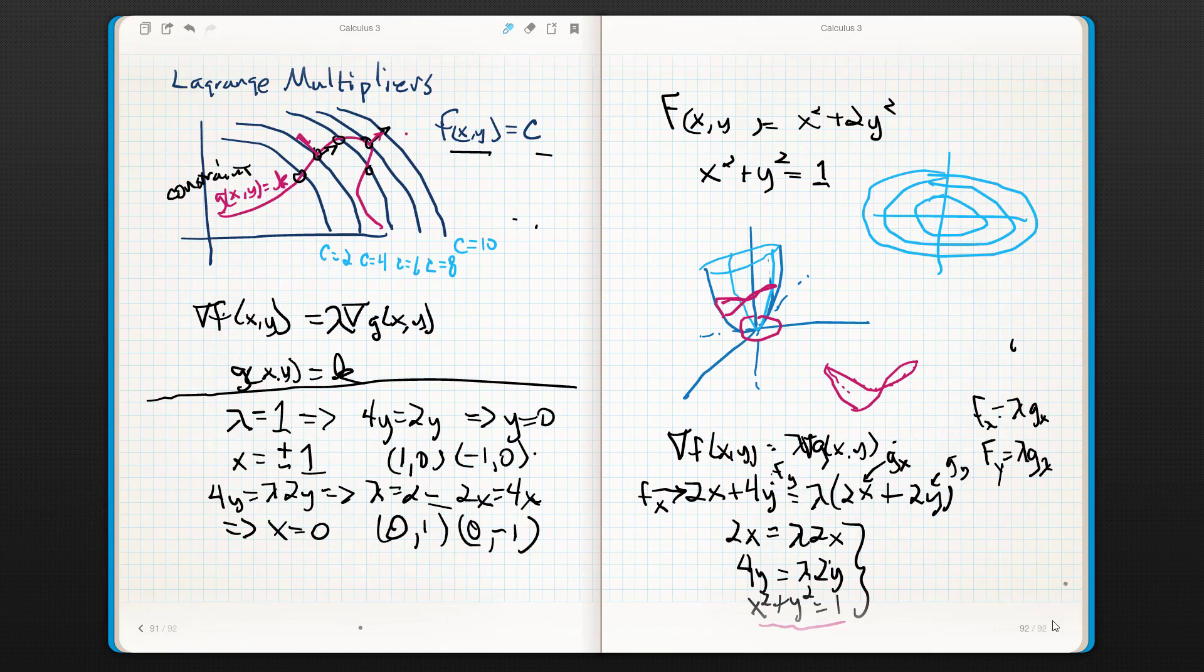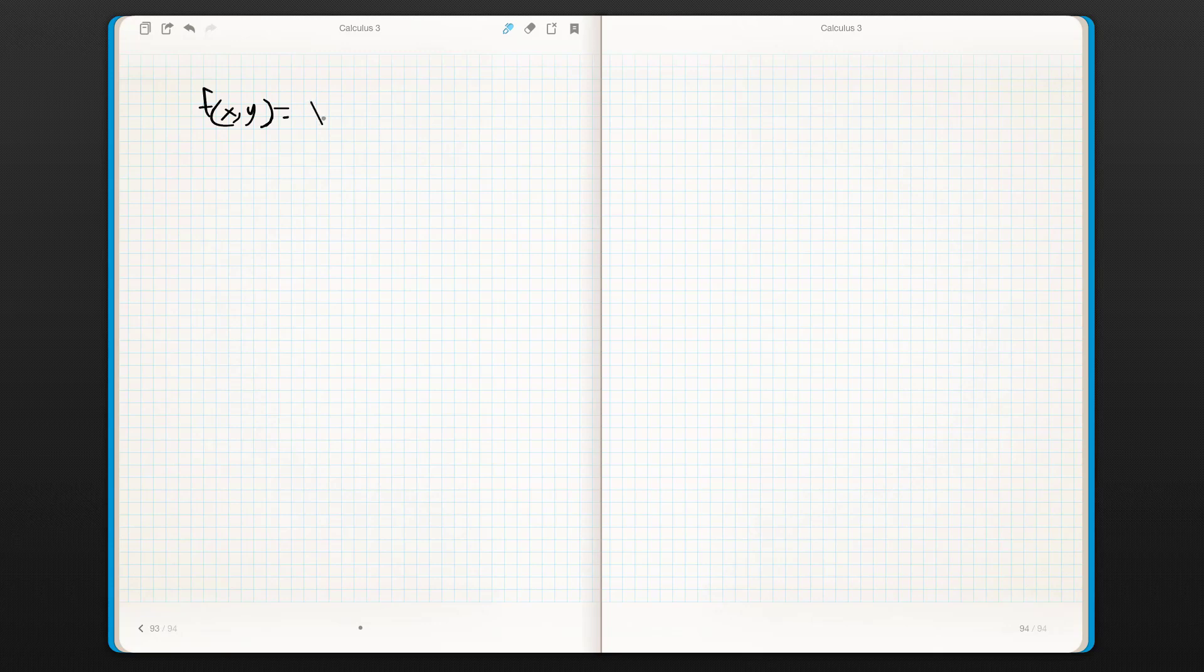Alright, now I'm going to kick over. I need a new page. So what do we have? We have f of xy is equal to x squared plus 2y squared, and we have g of xy is equal to x squared plus y squared, which is equal to 1.